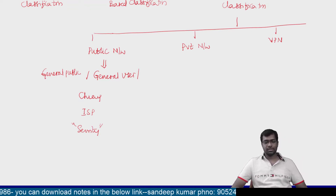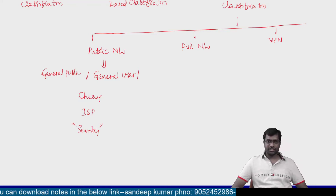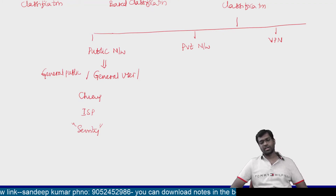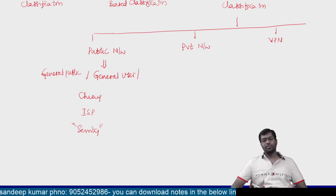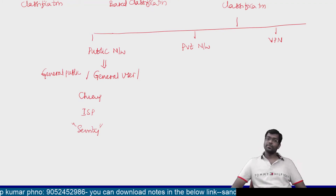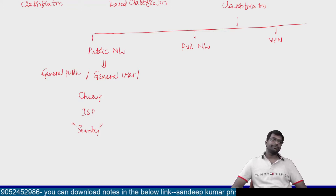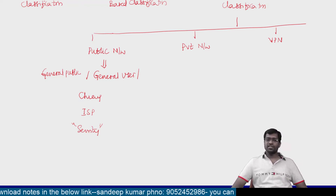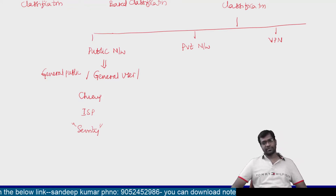With a public network, you have to compromise on security. So, a public network is used by general people and is cheaper compared to a private or virtual private network. These networks are maintained by an ISP — Internet Service Provider — and offer very less security compared to a private or virtual private network.